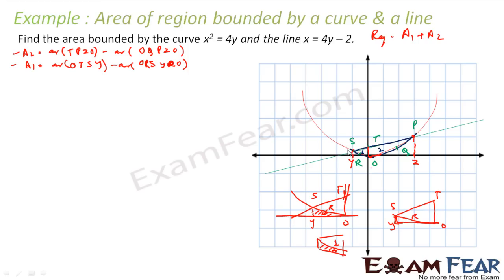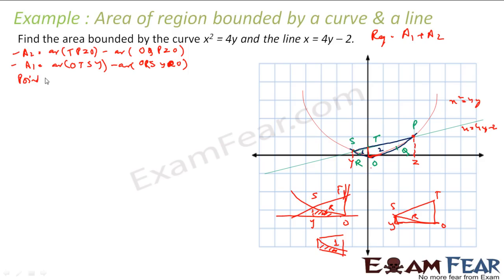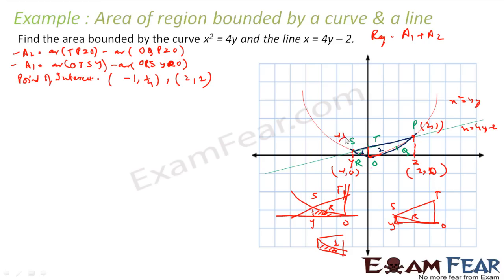Finding S and P means finding the points of intersection of the line x equals 4y minus 2 and the curve x squared equals 4y. Solving these two equations simultaneously, the points of intersection are minus 1 comma 1/4 and 2 comma 1. So the relevant x-coordinates are minus 1 and 2, giving us points at minus 1 comma 0 and 2 comma 0 on the x-axis.